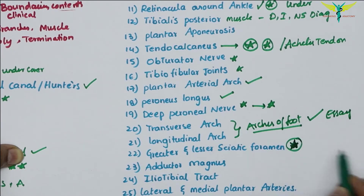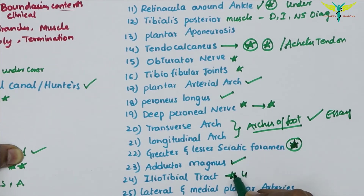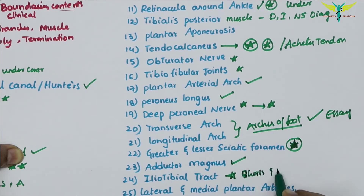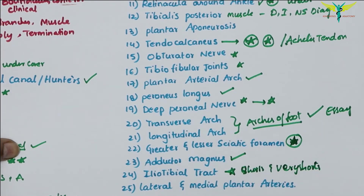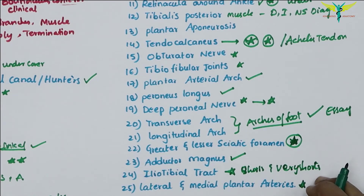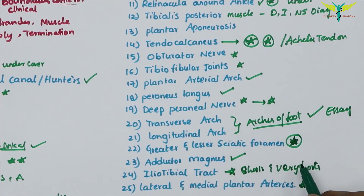The greater and lesser sciatic foramen and their contents are very important. The adductor magnus muscle is important. The iliotibial tract is very important in shorts and very shorts — draw a neat diagram. The lateral and medial plantar arteries are also very important with a neat labeled diagram.